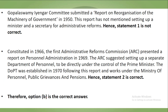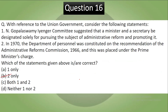The correct answer is B — only the second statement is correct. The Gopalswami Iyengar Committee submitted a report on reorganization of the machinery of government in 1950, and it did not mention setting up a ministry and secretary for administrative reform — so statement 1 is incorrect. The Administrative Reforms Commission, constituted in 1966, presented a report on personnel administration. In 1969, the ARC suggested setting up a separate Department of Personnel directly under the PM. The DOPT was established in 1970 following this report. So B is correct.